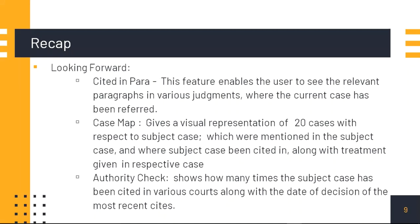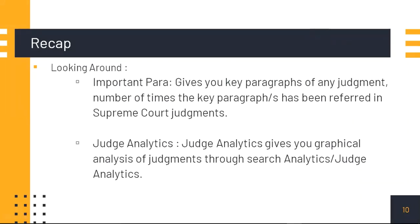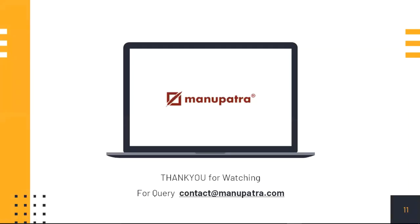Continuing the recap: Case Map is a visualization tool giving the 20 most relevant results — where this was cited, mentioned, or discussed. Authority Check gives the full list of all judgments and lets you track where the case was relied on, affirmed, mentioned, or dissented. For looking around: Important Para gives all key paragraphs that have been quoted verbatim in other judgments. Judge Analytics gives an overview of the judge and the kind of judgments written, so you can click on a subject and see similar judgments. I hope you found value in this video and will use the One Good Case method in your legal search. For queries, reach out at contact@manupatra.com. Thank you.